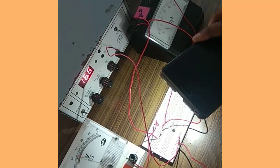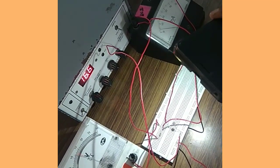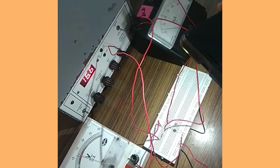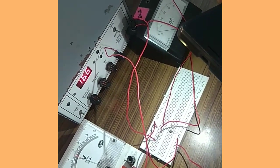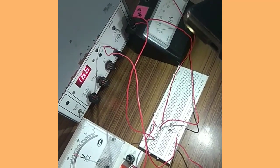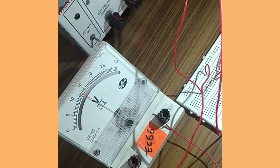Now I am slowly increasing the distance of the incident light from the LDR. You can note the ammeter values. The current in the ammeter is slowly decreasing, which means the resistance becomes higher as the distance increases.